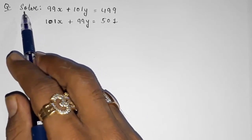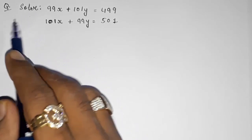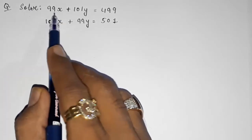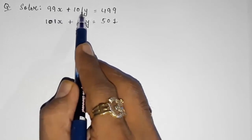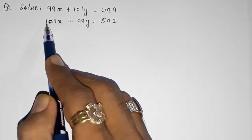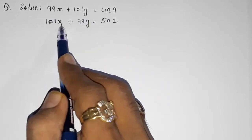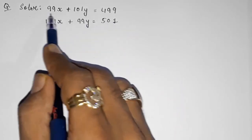Let us start with question number one: Solve 99x + 101y = 499 and 101x + 99y = 501.